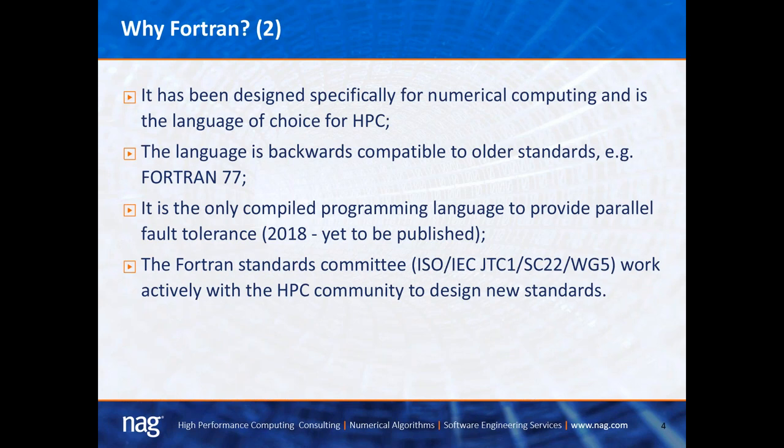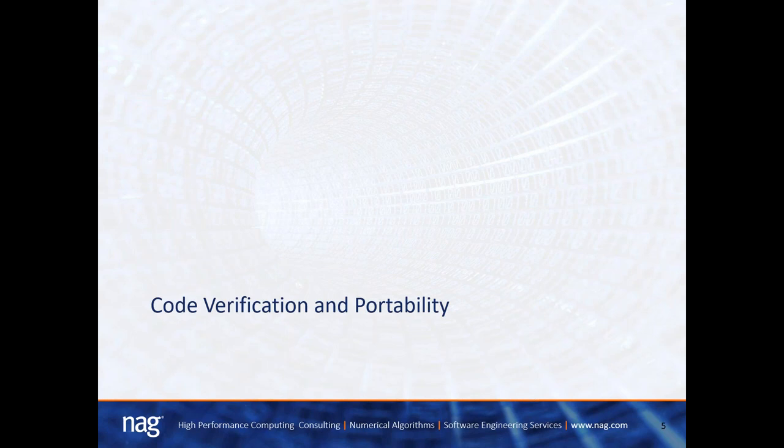My conclusion is that Fortran is really the dominant programming language of computational science and engineering. It has been designed specifically for numerical computing and is the language of choice for high-performance computing. The language is also backwards compatible to older standards such as Fortran 77, and it's really the only compiled programming language to provide parallel coarrays, which is the 2018 standard. The Fortran standards committee, known as WG5, works actively with the HPC community to design new standards, so it's a very modern language.